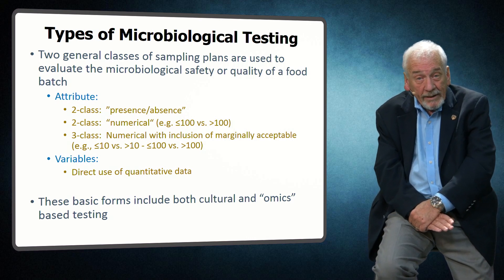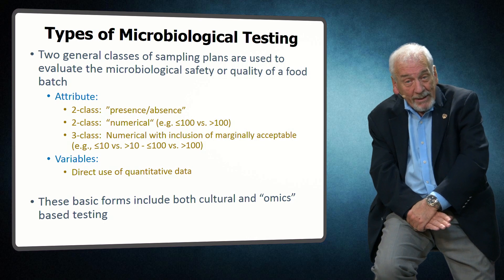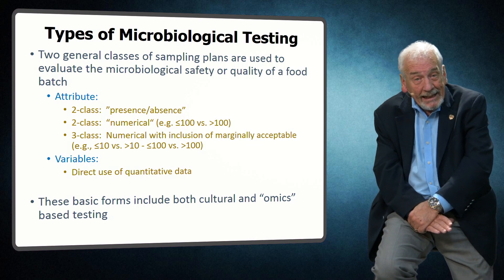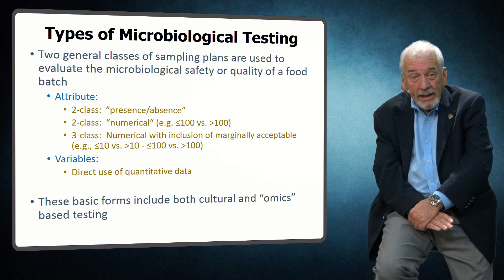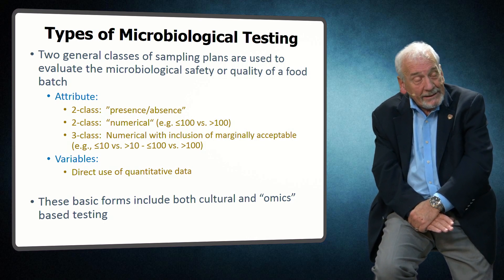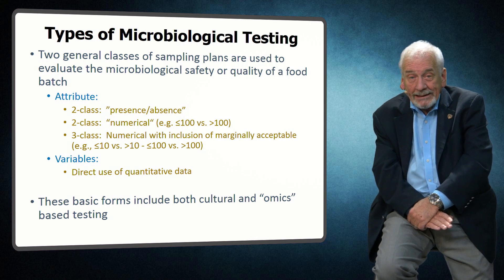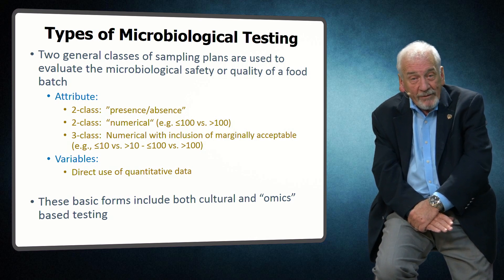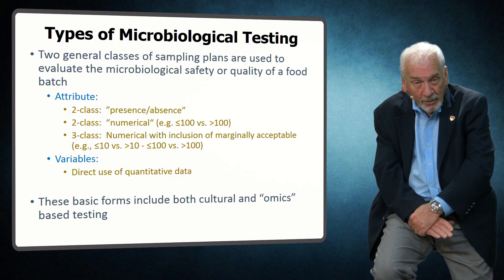Conversely, if the number of marginally acceptable samples exceed that specified percentage, the batch is considered unacceptable. The characteristics and examples of the various types of sampling plans will be considered in more detail in later modules.